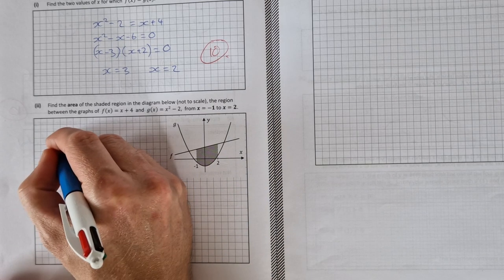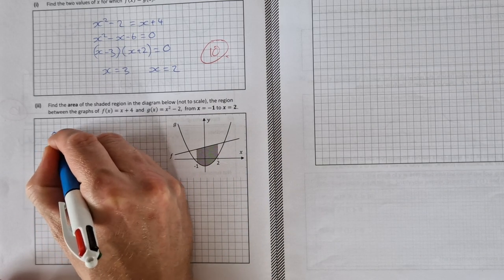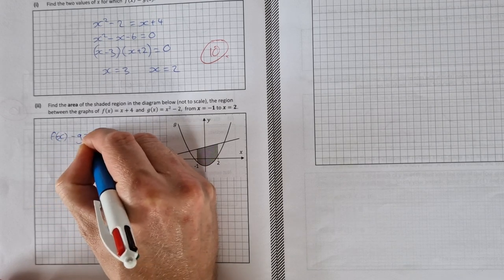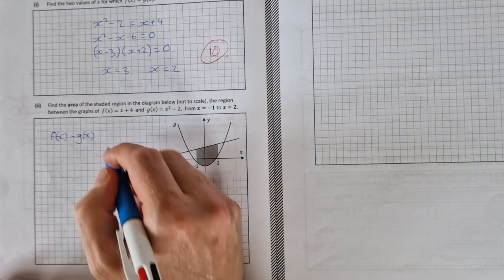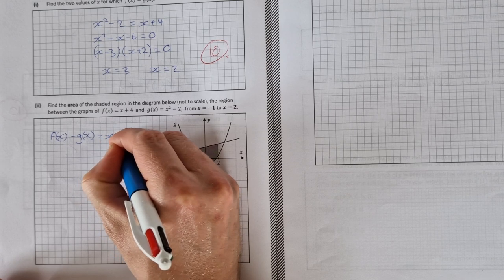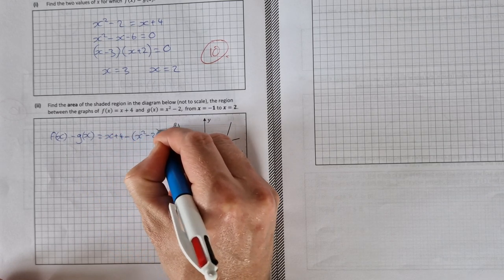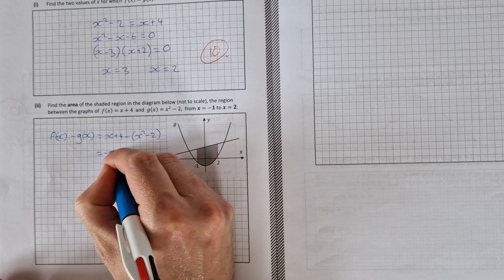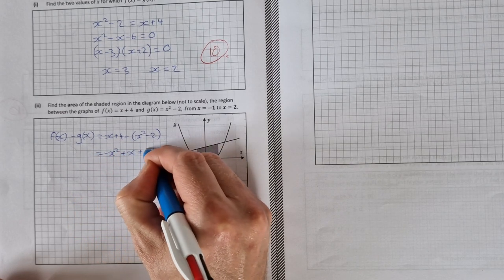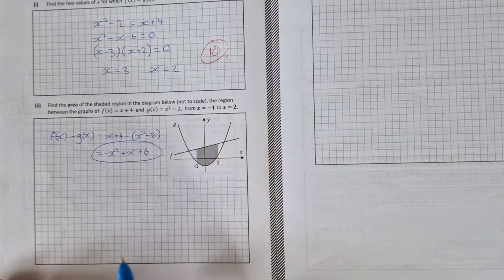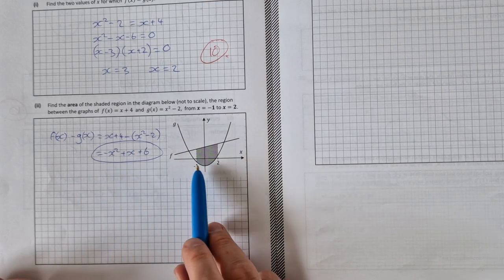There's a couple of ways to do this. The way that I think is easiest is to do f(x) - g(x), and that will give you a new function. So that's going to be x + 4 - (x² - 2), which simplifies down to give you -x² + x + 6.